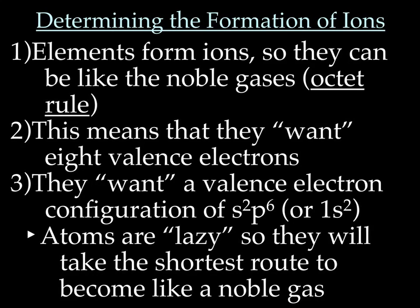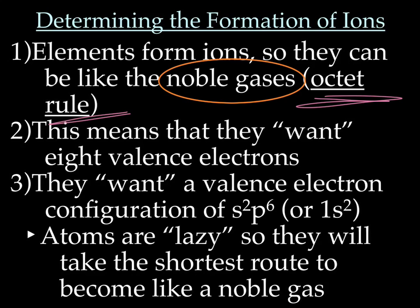Let's do a quick overview of how you would determine the formation of ions. Elements form ions so they can be like the noble gases — that's the octet rule, that's the whole goal. Basically, they want eight valence electrons, or full valence electrons, which would be S2P6, or they could be like helium, which is 1S2. However, atoms are lazy, so they will take the shortest route to become like a noble gas.